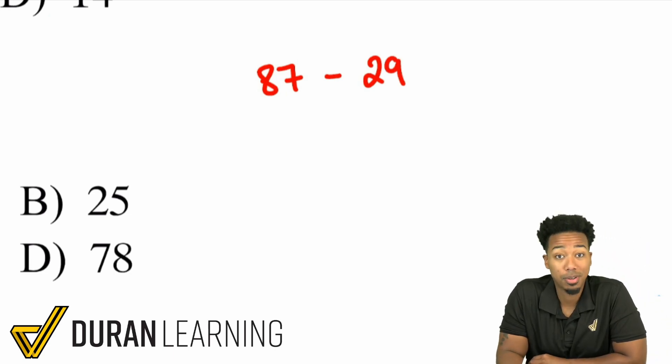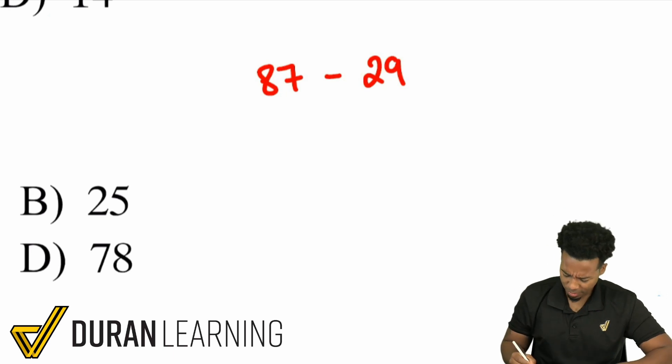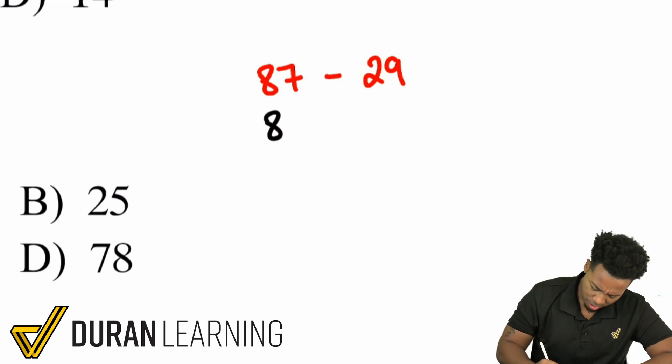Here's a nice little strategy that we can apply here. Instead of you know writing this out borrowing a 1 and doing all this mumbo jumbo. Instead just think of it like this. 87 minus 29. Think of it as 87 minus 30.